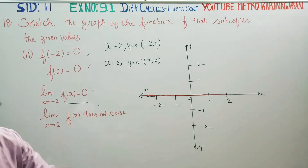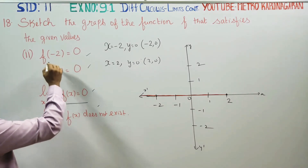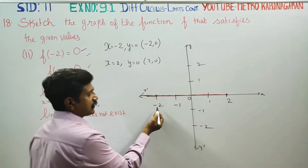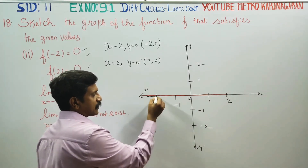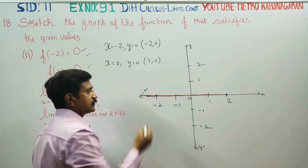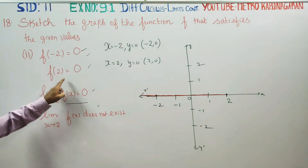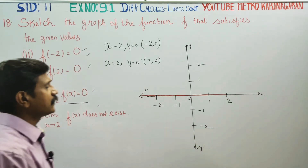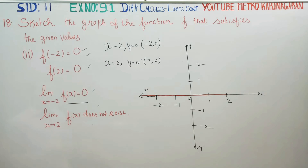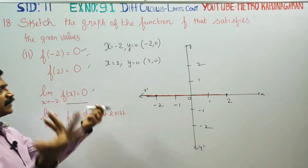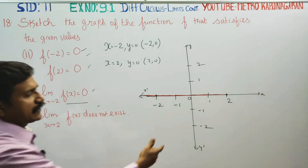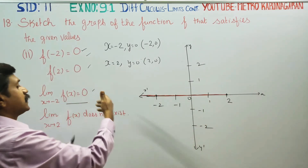You said conditions satisfy. F of minus 2 is equal to 0, and when x is equal to 2, y is equal to 0. These are the independent points. When x is equal to minus 1 the value is 0, when x is equal to 0 the value is 0, when x is equal to 1 the y value is obtained.